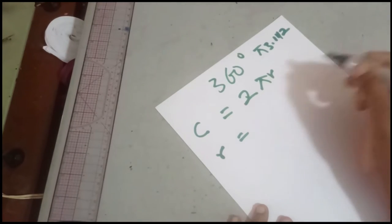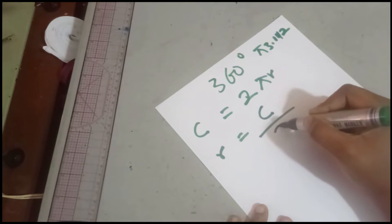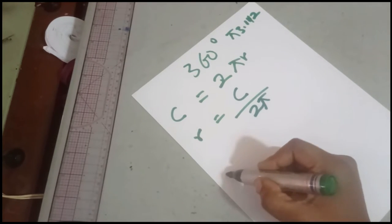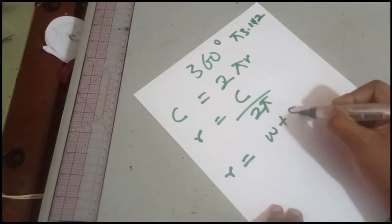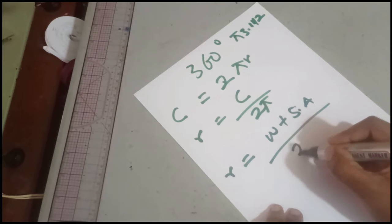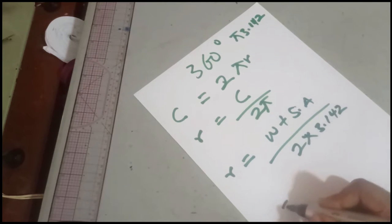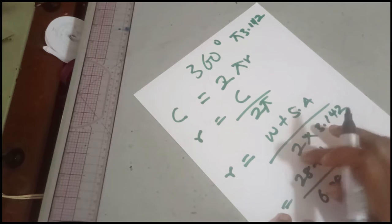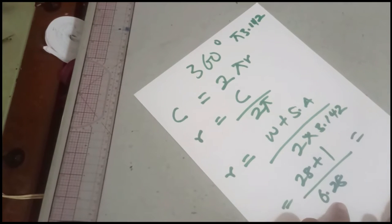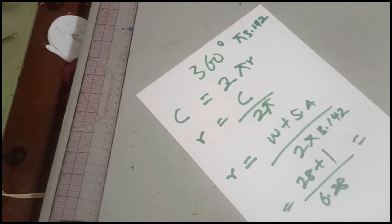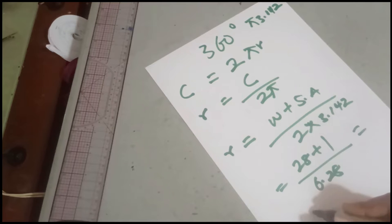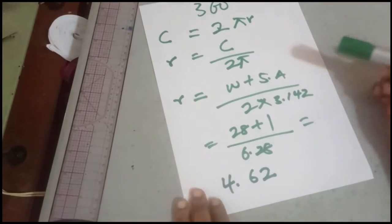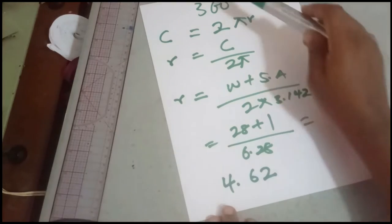The radius will come from the formula: radius is equal to circumference over 2 pi. Our circumference is waist plus seam allowance, and our pi is 3.142. So in this case, my waist is 28 plus 1 inch seam allowance, divided by 6.28 — that's 2 times 3.142. So that's 29 divided by 6.28, which gives me around 4.62. For a circumference of 29 inches, my radius for a full 360 degree flare is 4.62.